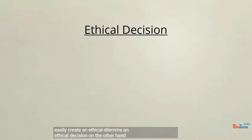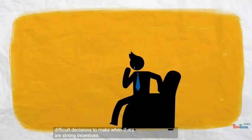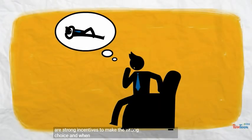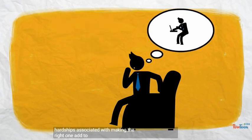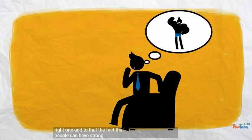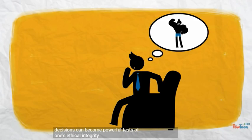An ethical decision, on the other hand, involves choosing between right and wrong. While these situations may have a more obvious right answer, they can still be difficult decisions to make when there are strong incentives to make the wrong choice and when there are perceived hardships associated with making the right one. Add to that the fact that people can have strong psychological ways of justifying their actions, and these decisions can become powerful tests of one's ethical integrity.